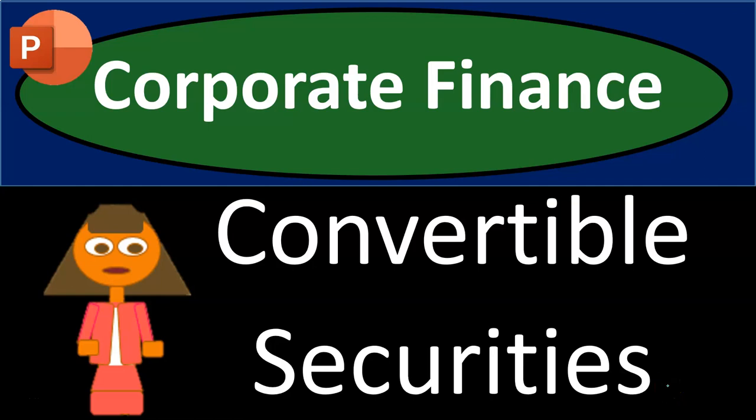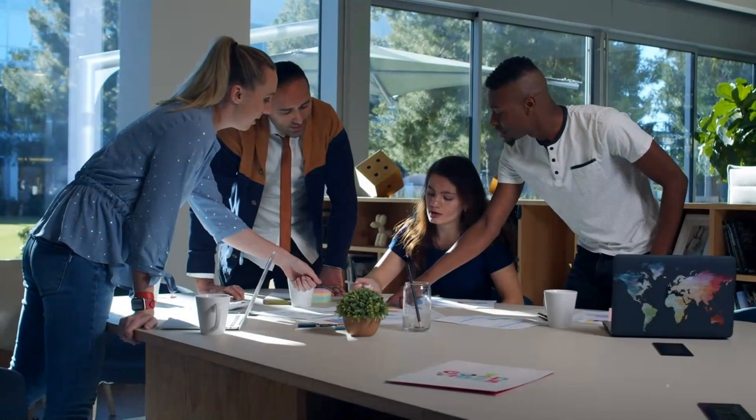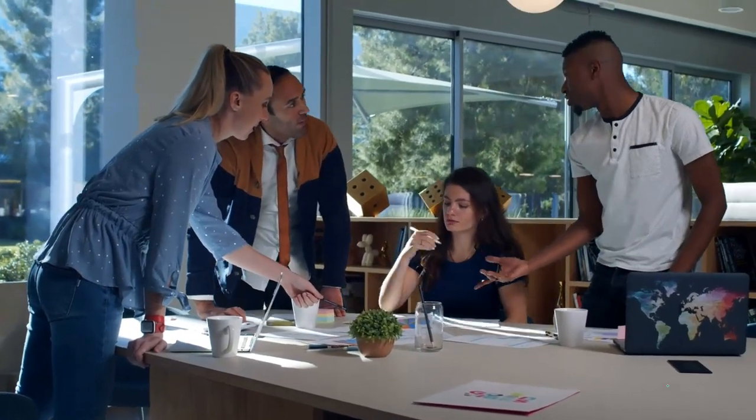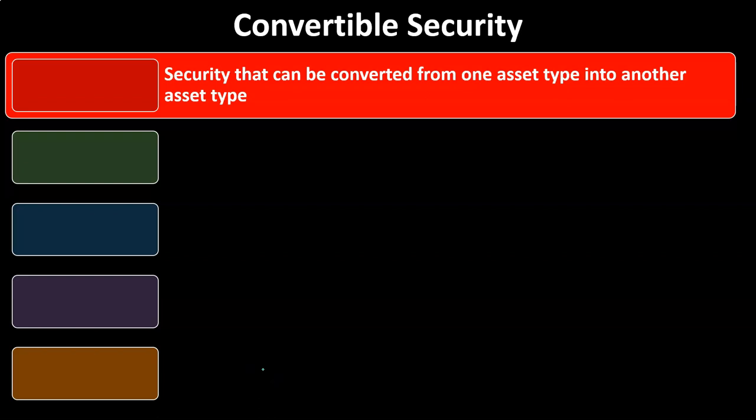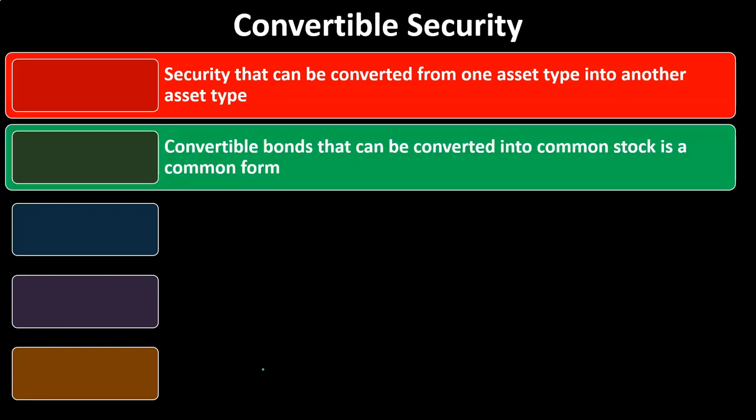Corporate finance presentation: convertible securities. It's time to take our chance with corporate finance. Convertible securities are securities that can be converted from one asset type into another asset type. One of the most common types of convertible securities is convertible bonds, which have the option but not obligation for the bondholder to convert the bonds into some number of underlying stocks.